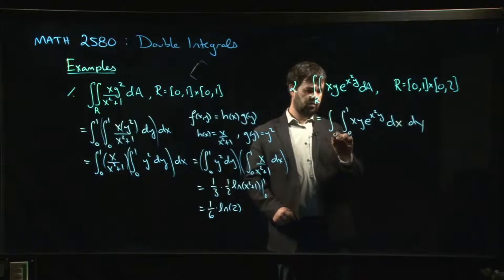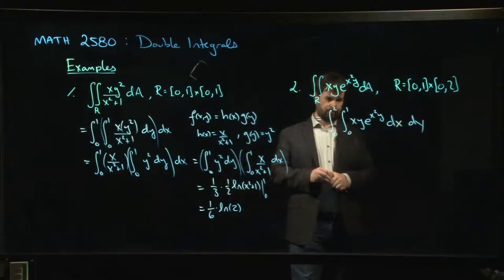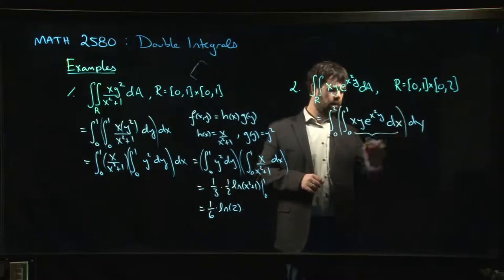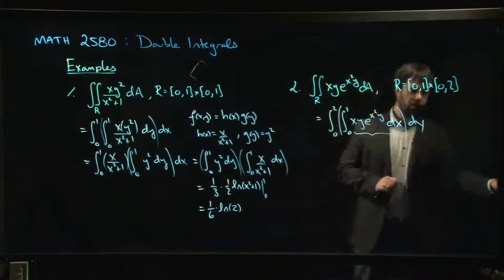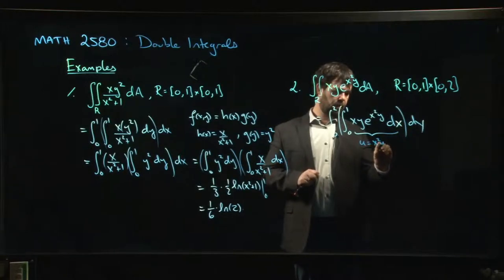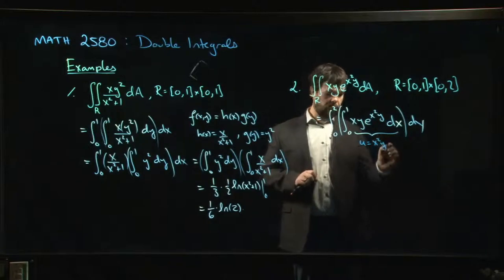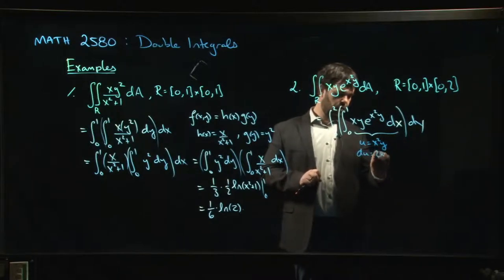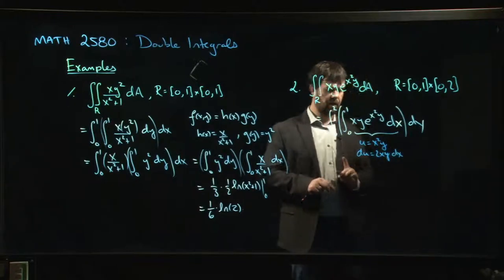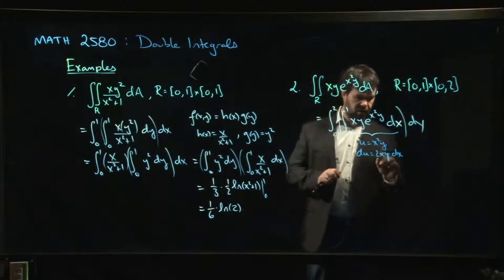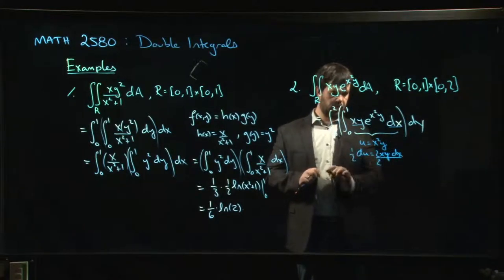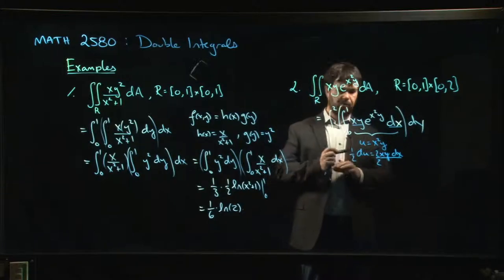So what if we do x first and then y? x goes from 0 to 1, y goes from 0 to 2. For the inner integral, we do a u-substitution: let u equal x squared times y. Treating y as a constant, du equals 2xy dx — it's like a partial derivative with respect to x. So x y dx equals (1/2) du, and we're in business because x y dx is sitting right there. We just have to divide by 2.